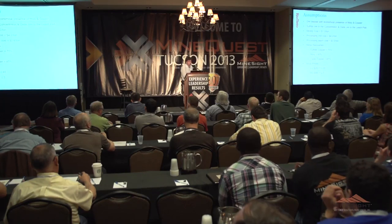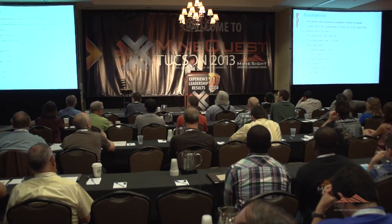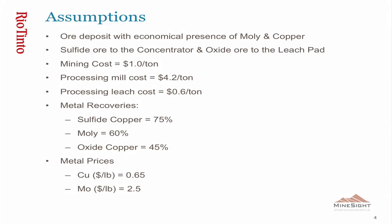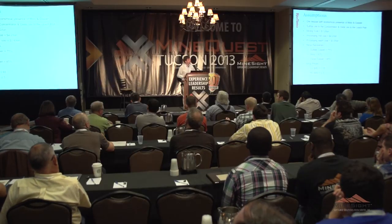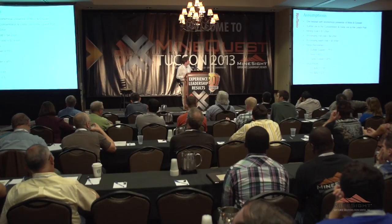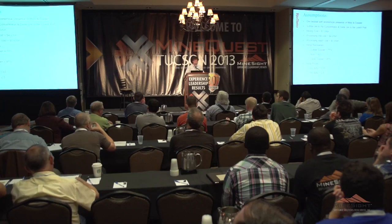Here are the assumptions of the project. It's a molybdenum-copper project. We have six ore types and two processes: mill and leach. Three ore types will go to the mill concentrator, one type will go to the leach pad, and two types will go to either the mill or the leach depending on the economics of the block.